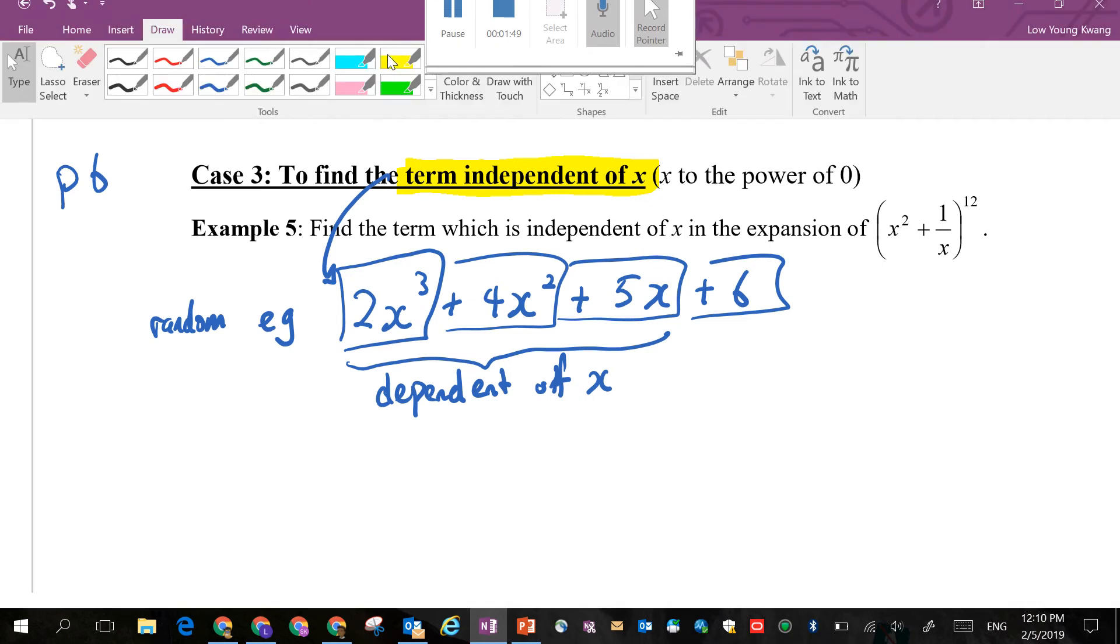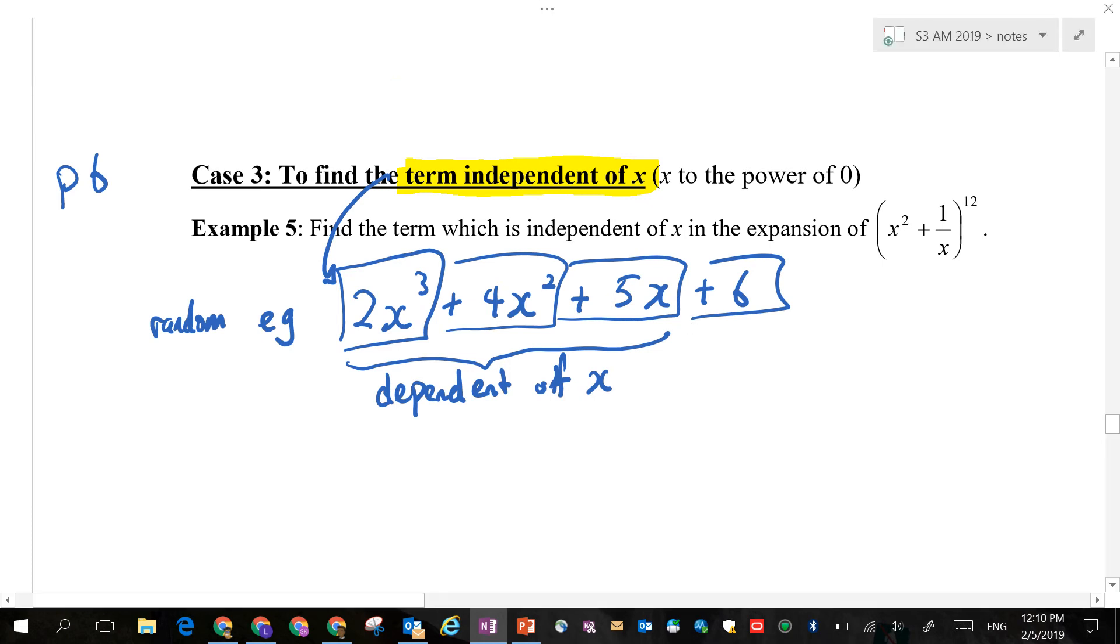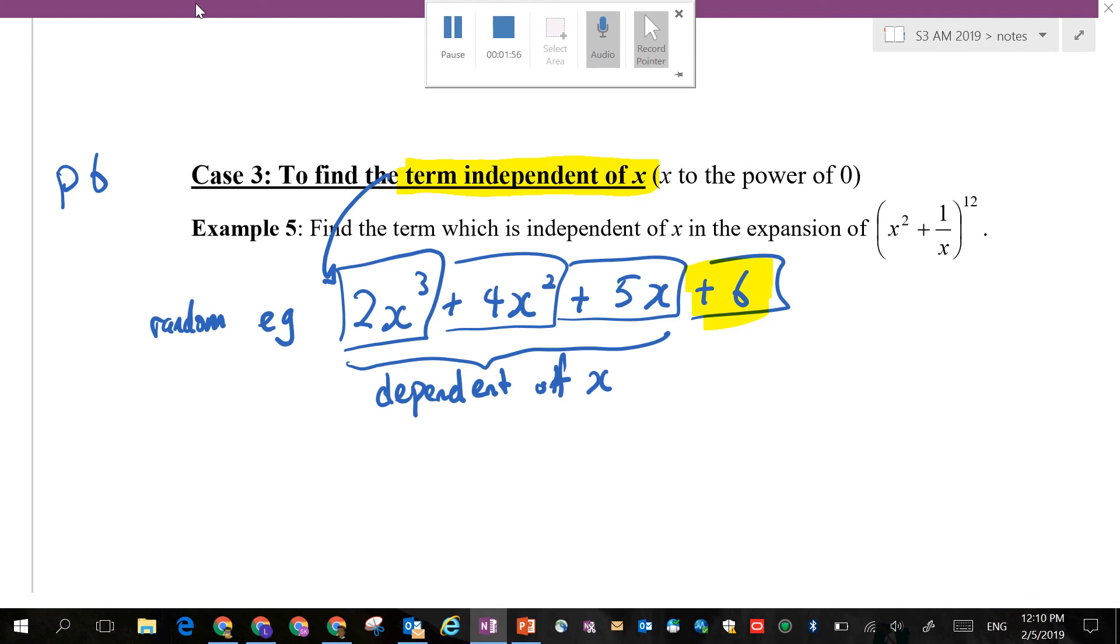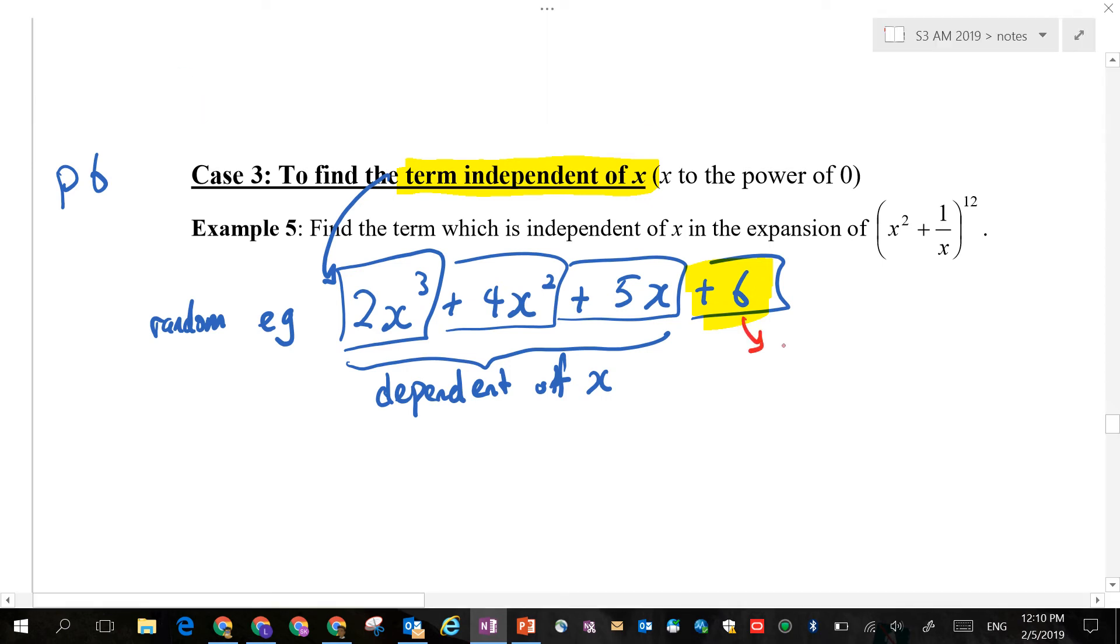Left, the last term. Now, what is special about 6? 6. Very good. Can you write down? This is 6 to the power of x to the power of 0. And therefore, this 6 is not afraid of x. If x is 10, 6 is still 6. If x is 100, 6 is still 6. Because there is no x what?